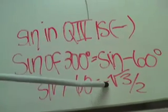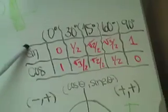We bring it down and get sine of negative 60 equals negative square root of 3 over 2, which we got from the table. We keep the negative sign that came from the unit circle.